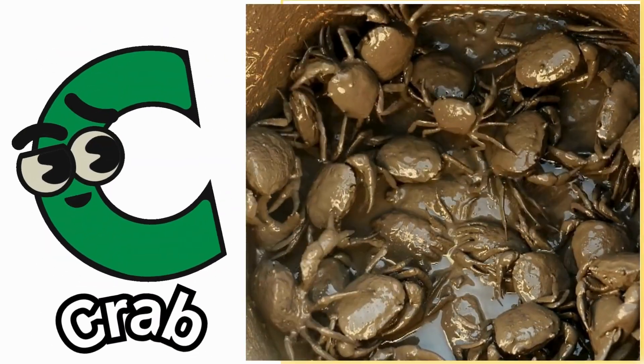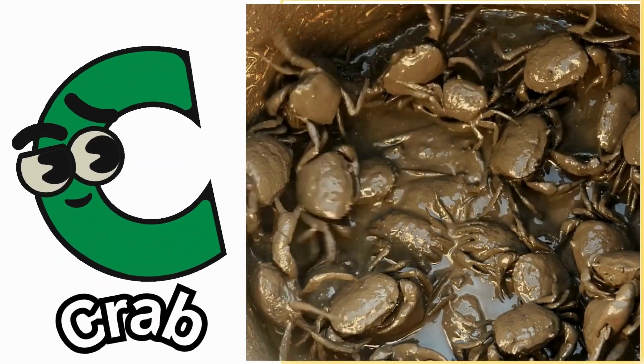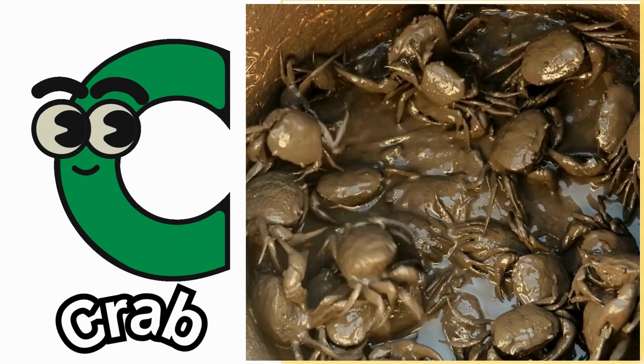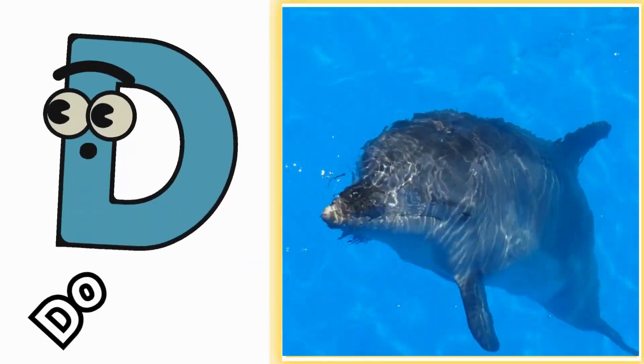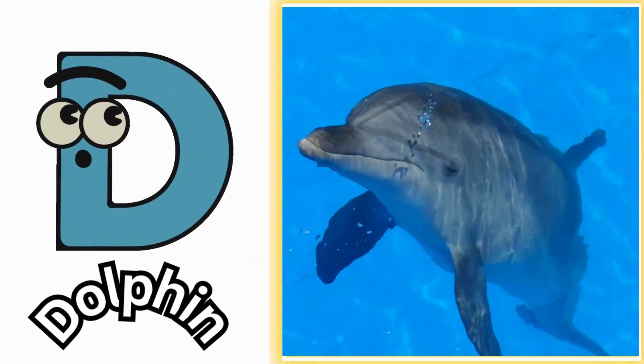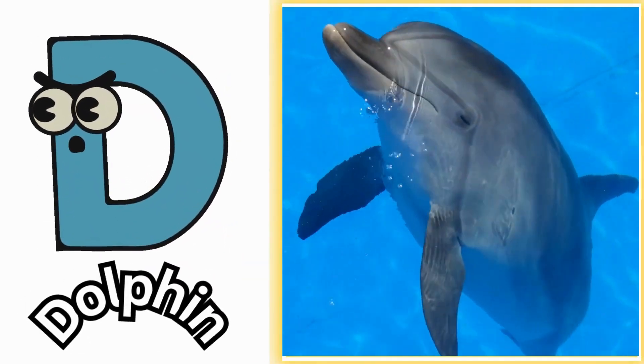C is for crab, kuh, crab. D is for dolphin, dolphin.